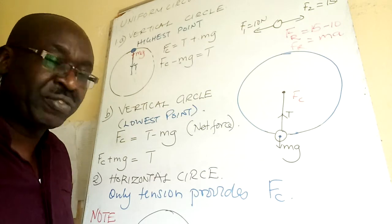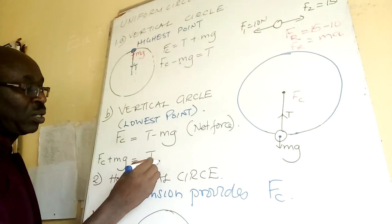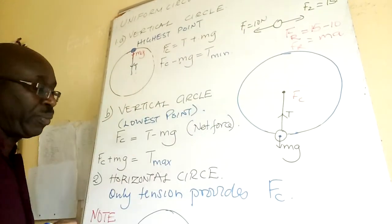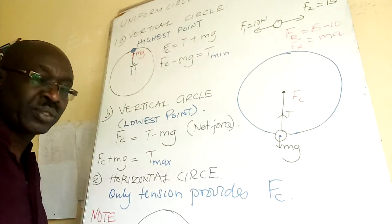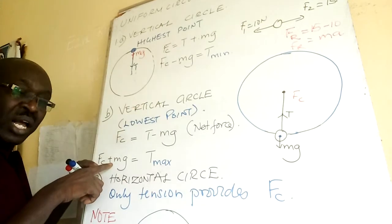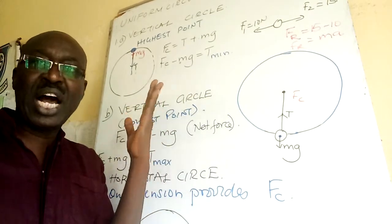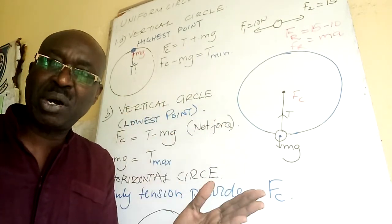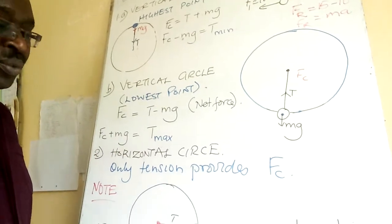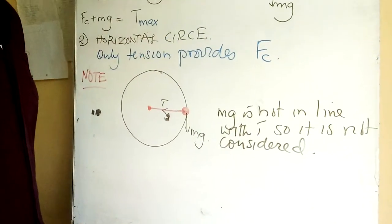Comparing the two cases: at the highest point FC equals T plus mg, and at the lowest point FC equals T minus mg. At the highest point we get maximum tension, and at the lowest point we get minimum tension. This is why problems ask you to find maximum and minimum tension.